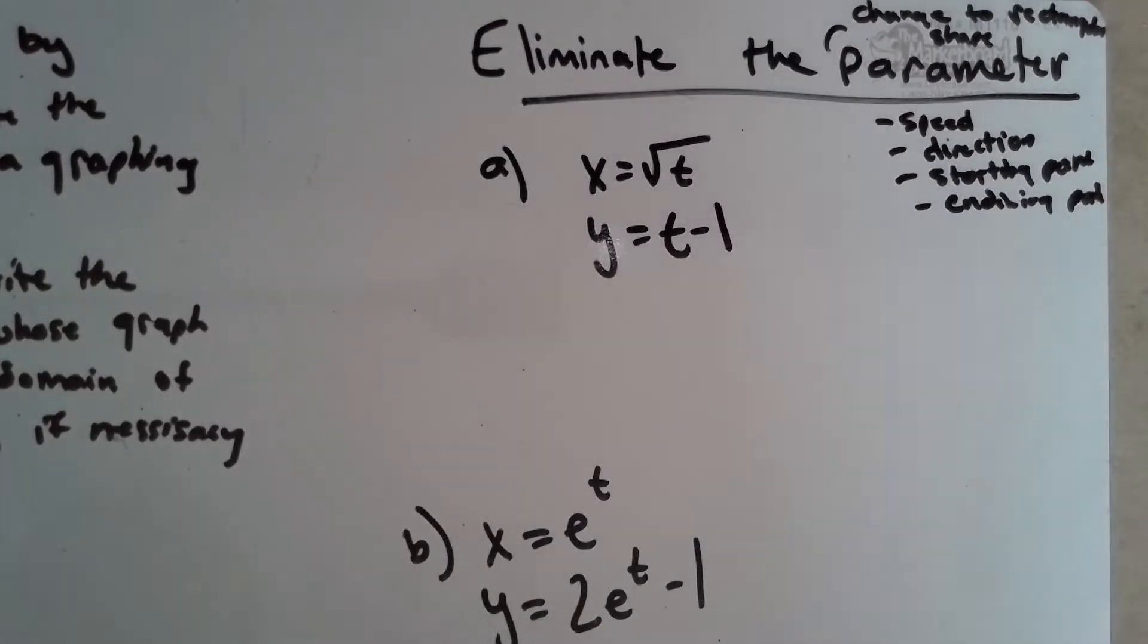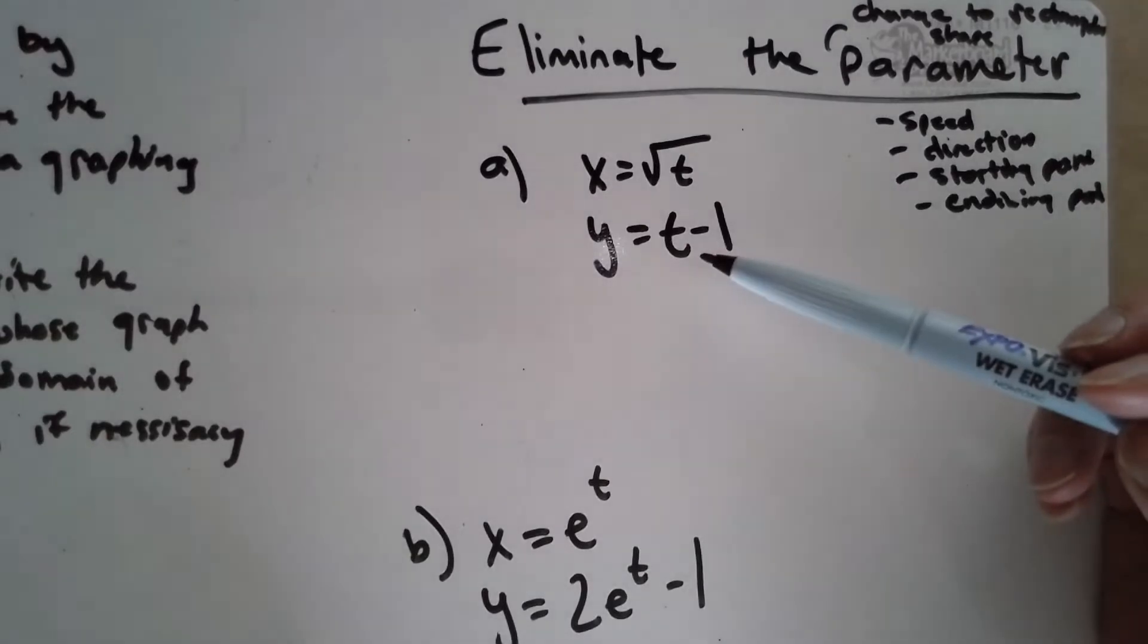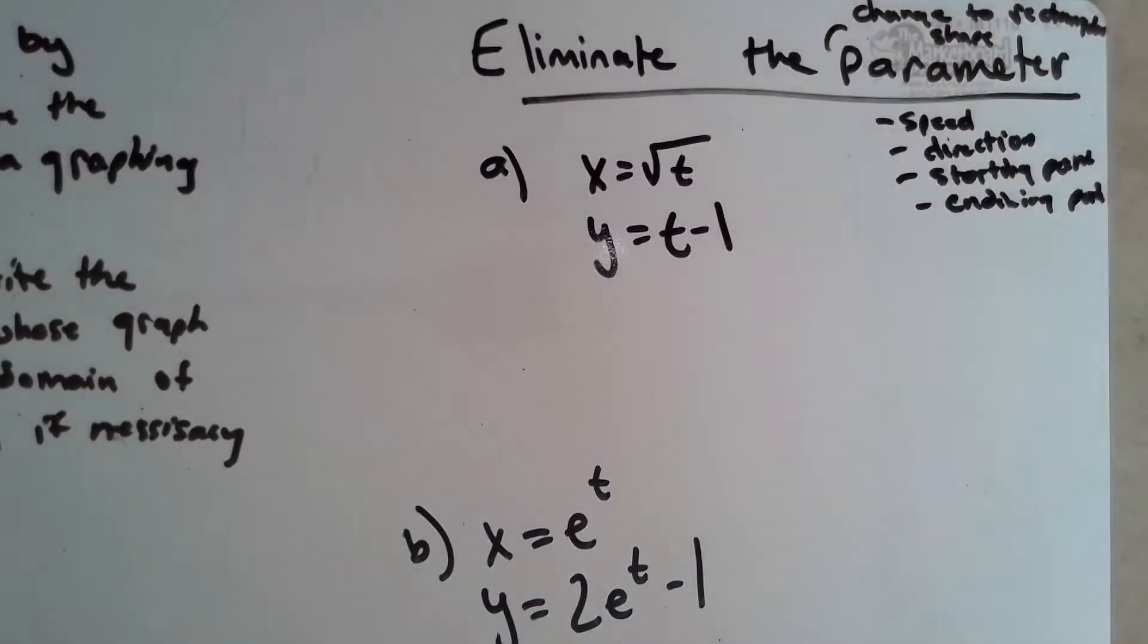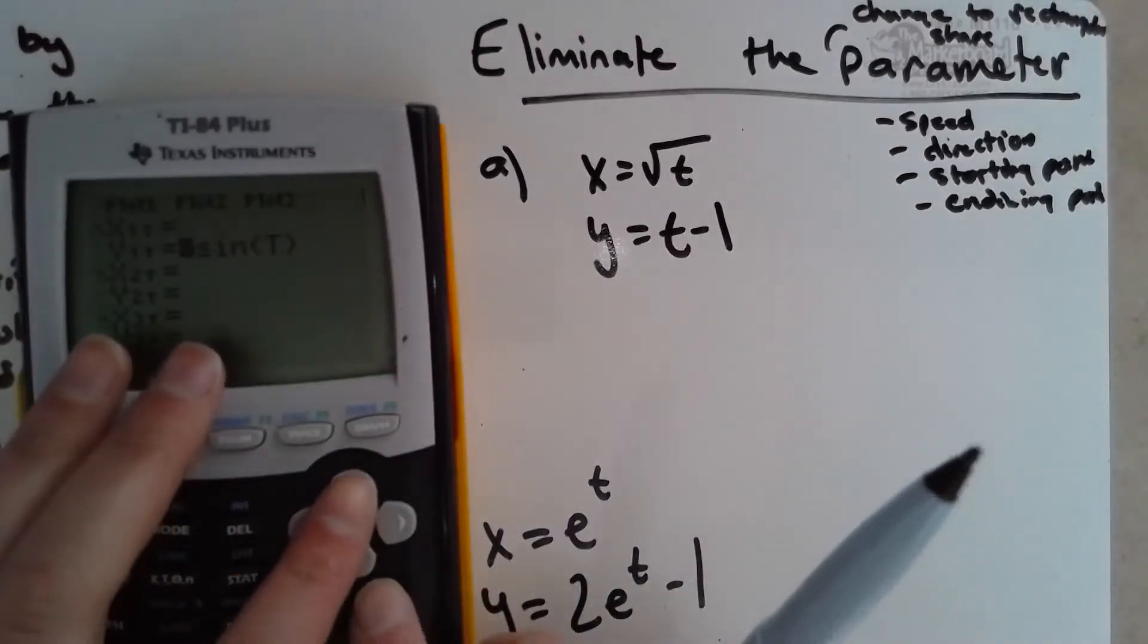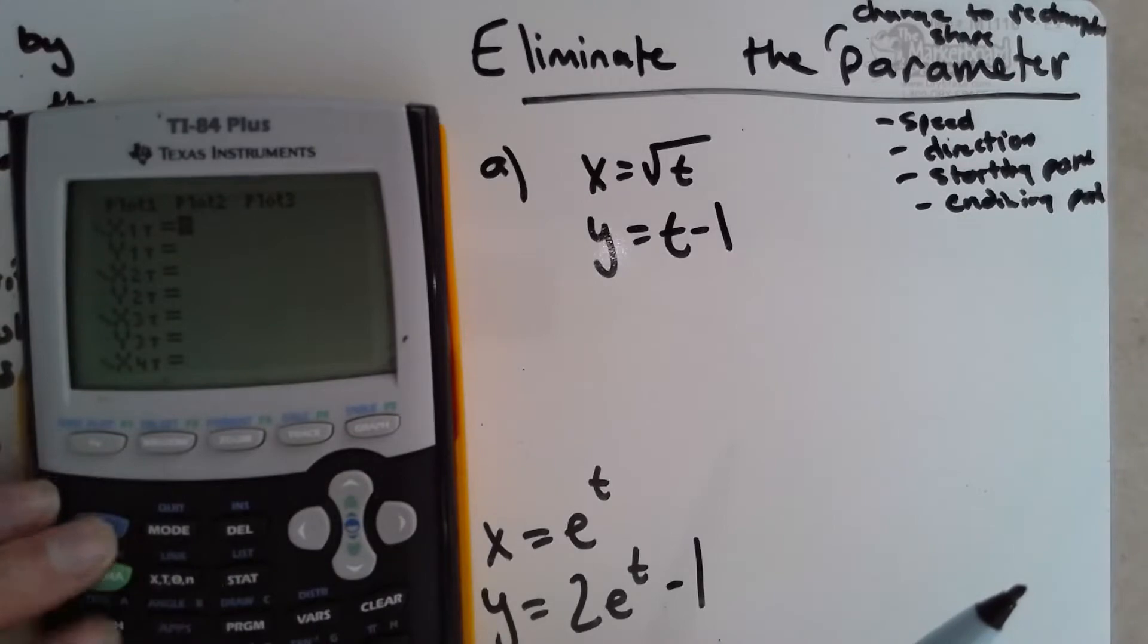So eliminate parameter, change it to rectangular, which is going to give us our shape. So if we wanted to, we could go ahead and graph this either by hand or with our calculator to kind of see what it's going to look like. So that's the square root of T, so I'm still in parametric, and T minus one.